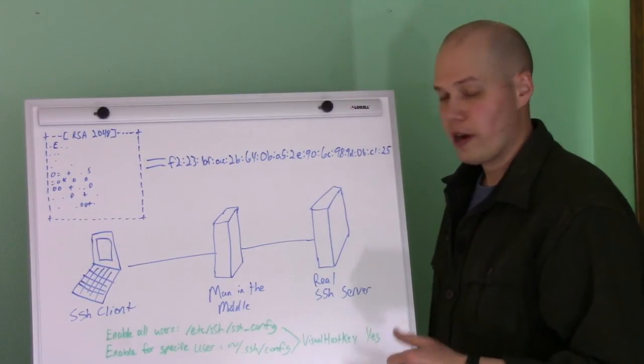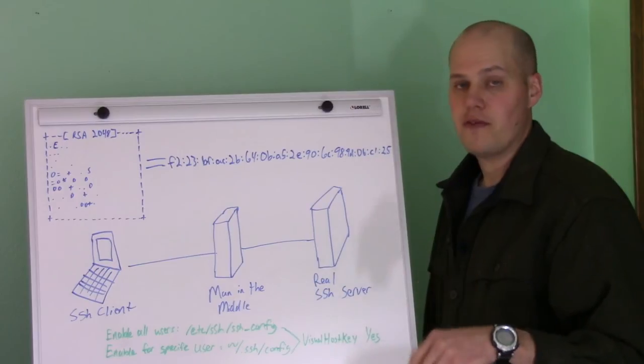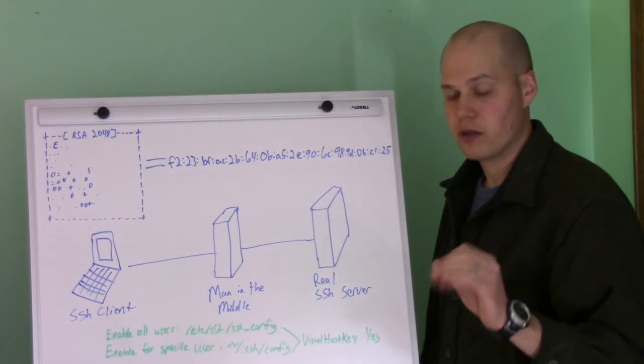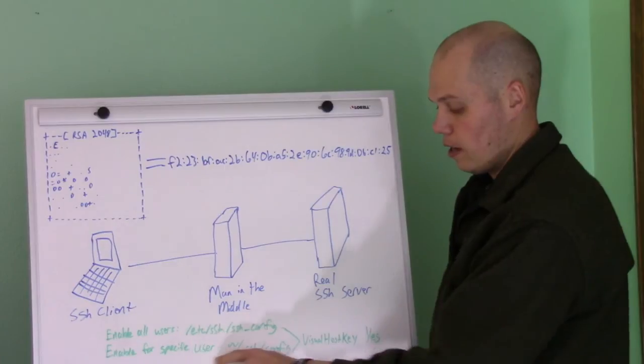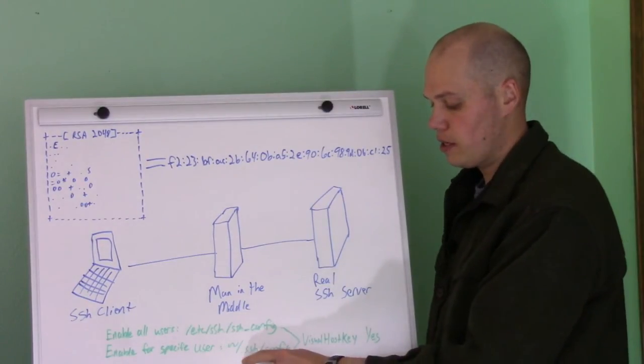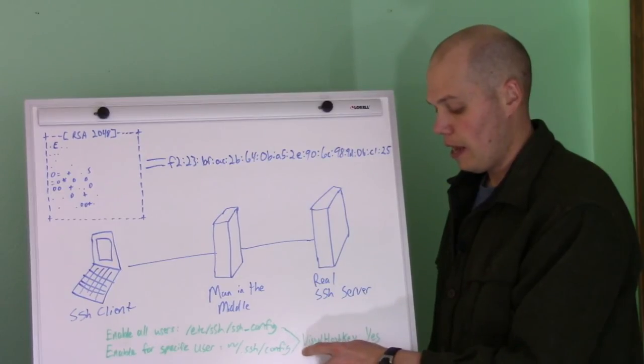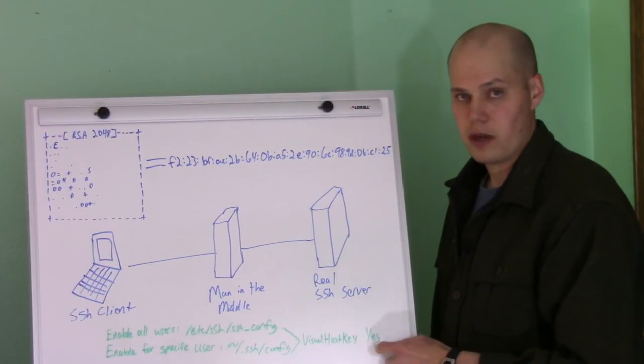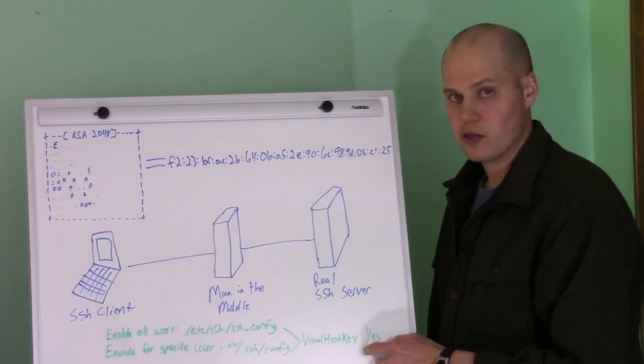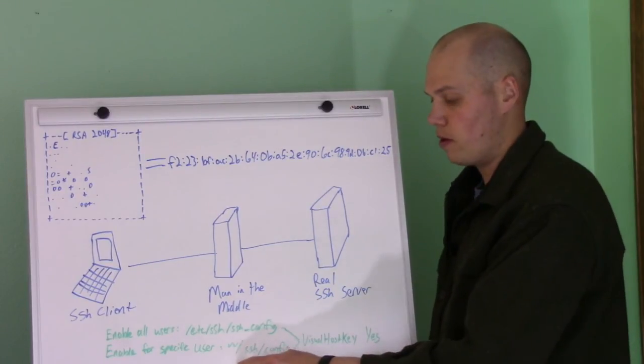If you want to enable it on a per-user basis, if you don't have root access on the server, you just want to enable it for your personal user, you can, in your home directory, go to the .ssh directory, create a file called config if it's not already there, and add the option VisualHostKey yes as well, and that will enable it just for that one specific user.